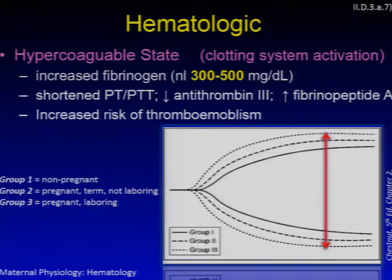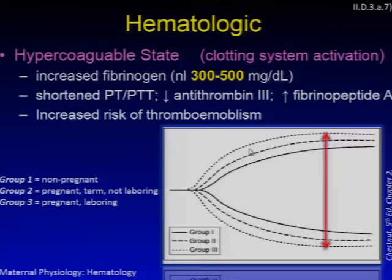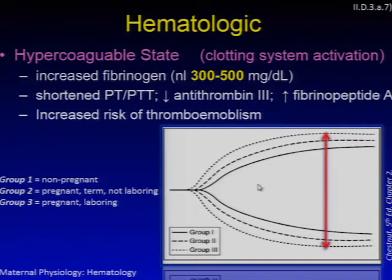Results from a TEG study comparing non-pregnant women, term pregnant but non-laboring women, and laboring pregnant women show a progressive decrease in R and K values, an increase in alpha angle, and an increase in maximum amplitude, with a decrease in lysis. These changes can begin as early as 10 to 12 weeks of gestational age. Pregnancy represents a state of accelerated but compensated intravascular coagulation.